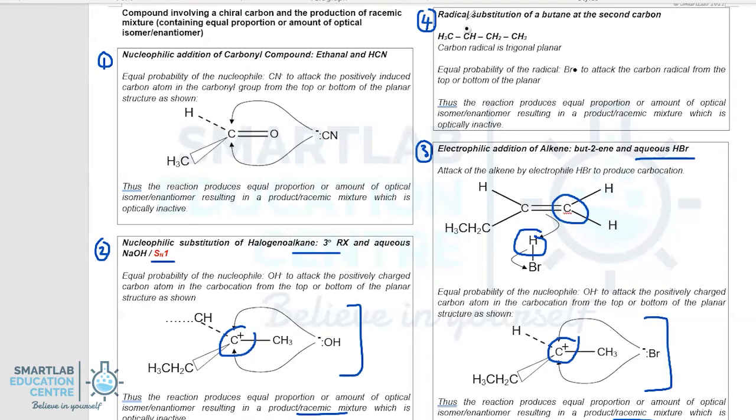Say, for example, in this case, there is a radical substitution of a butane in the presence of your halogen radicals. You will find that in this case, the radical is trigonal planar, but it also can be flexed in both directions, which means that there is also an equal probability of going from the top and below for the bromine radicals. And hence, because of that, you will also be able to produce a racemic mixture that ends up as being optically inactive as well.